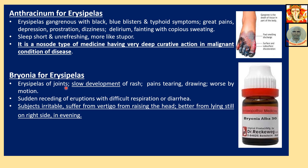Bryonia for Erysipelas: Erysipelas of joints. Slow development of redness. Pain tearing and drawing. Worse from motion. Sudden receding of eruption with difficult respiration or diarrhea. Subjects irritable, suffering from vertigo from raising the head. Better from lying still on the right side, in the evening.